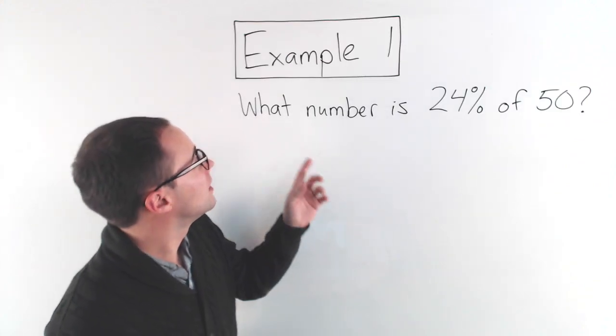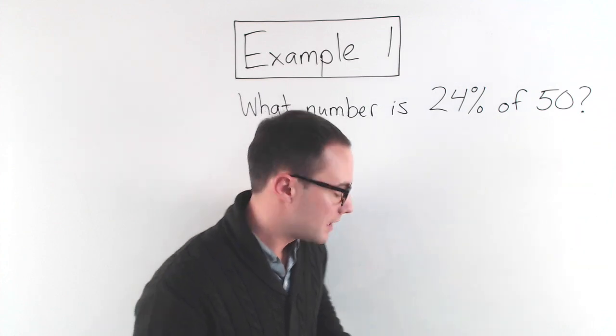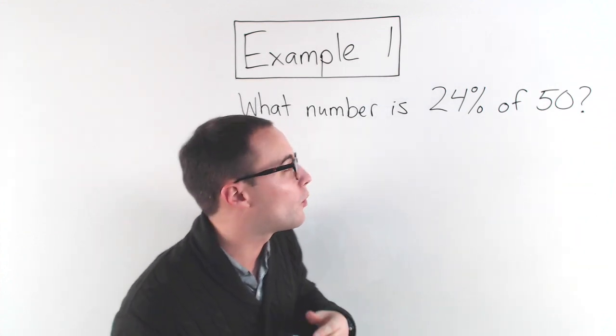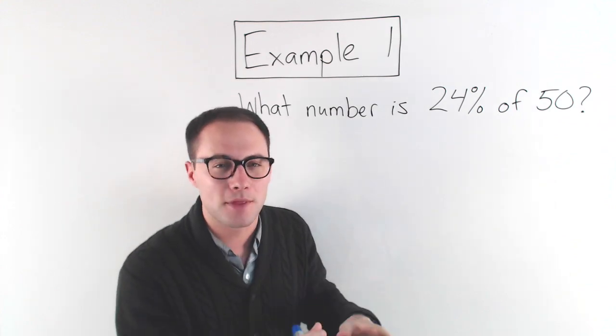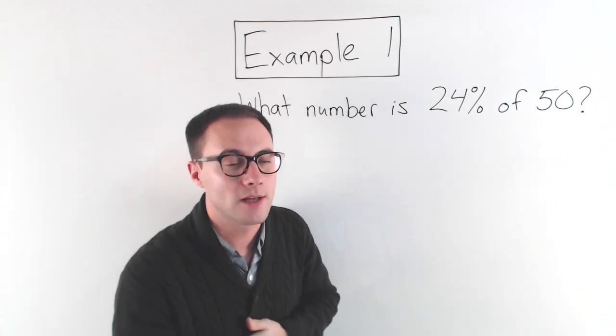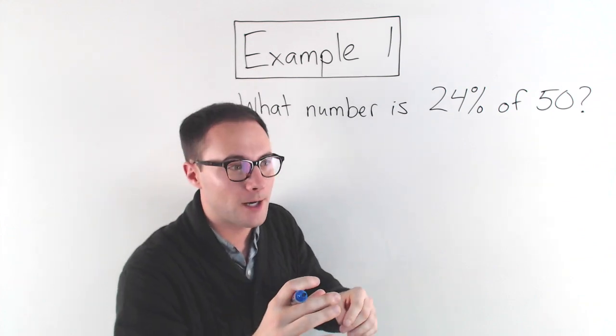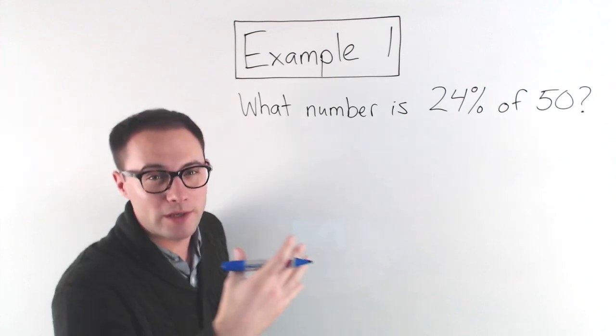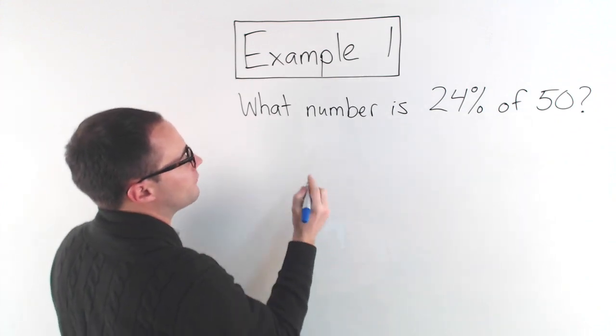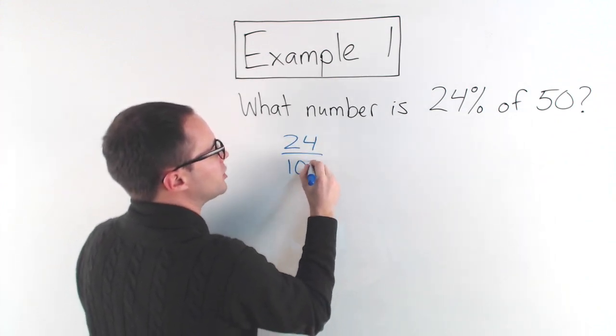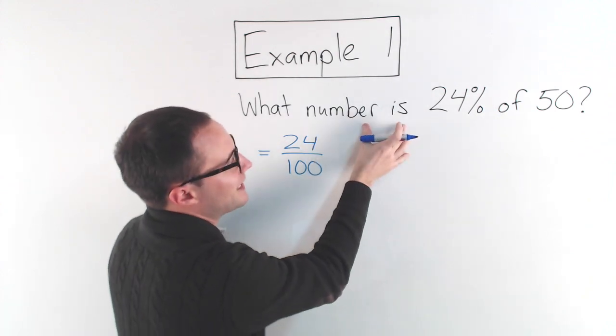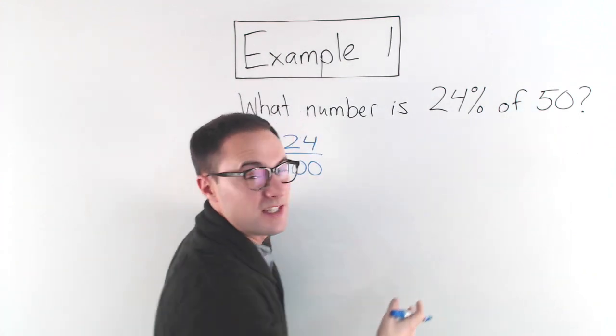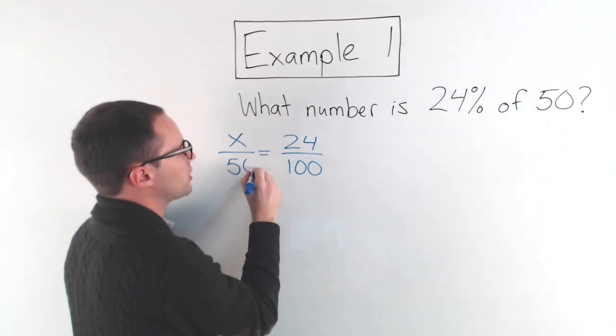All right, example one. What number is 24% of 50? Now, before I show you how to solve this with the percent equation, I want to show you that it's the exact same thing as solving with a proportion, just kind of one step ahead. So if we were going to do this as a proportion like we did in the last video, well, 24% would be 24 out of 100 equals what number is? That's the part. So that would be X over 50 is the whole. So my proportion would look like this: X over 50 equals 24 over 100.